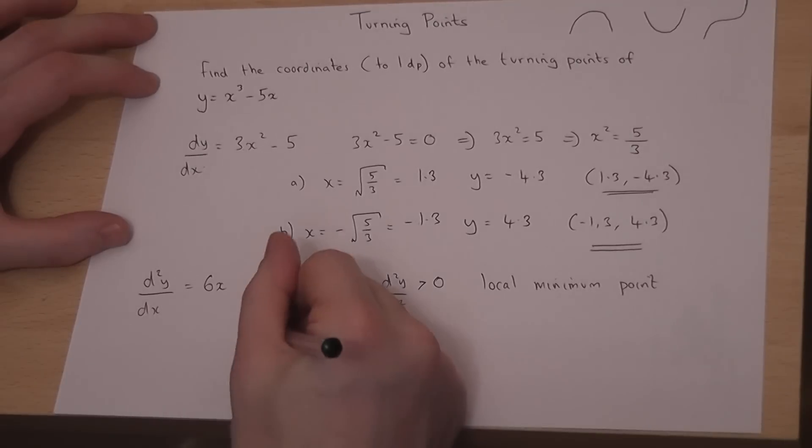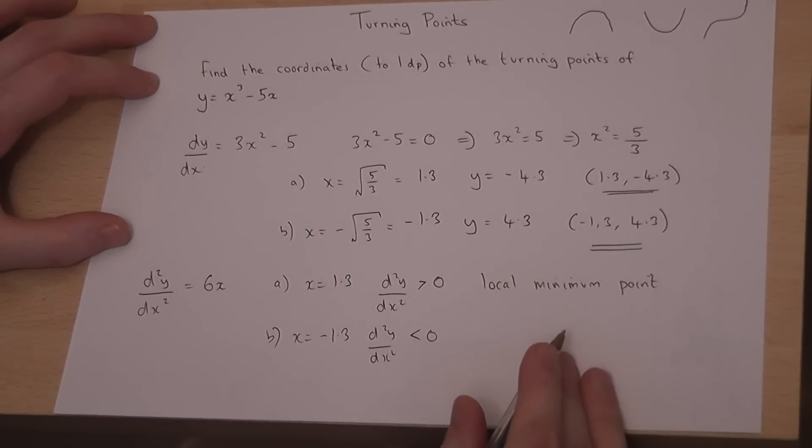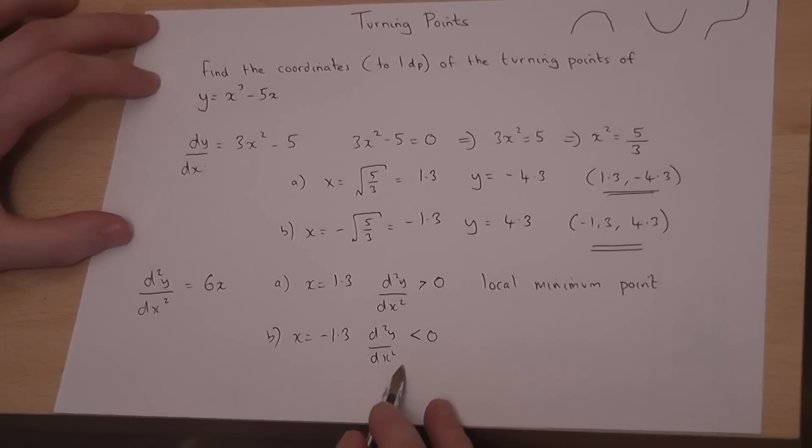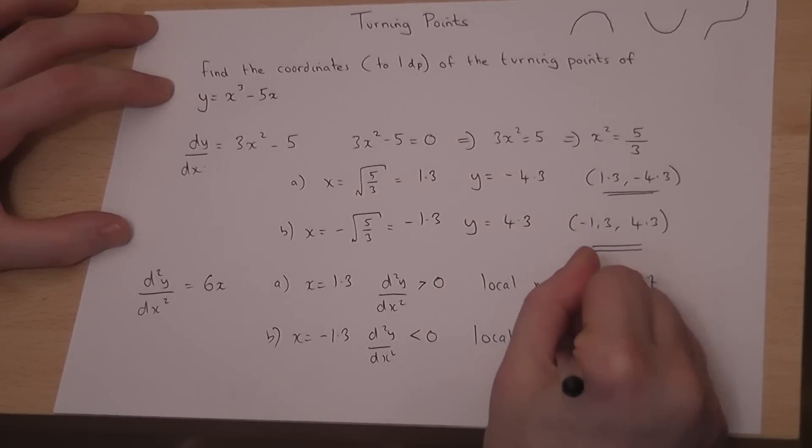If I then check when x equals minus 1.3, and put this into d squared y by dx squared, then I get that the answer is negative. And when you get a negative second differential, it's a max point. So this is called a local maximum point.